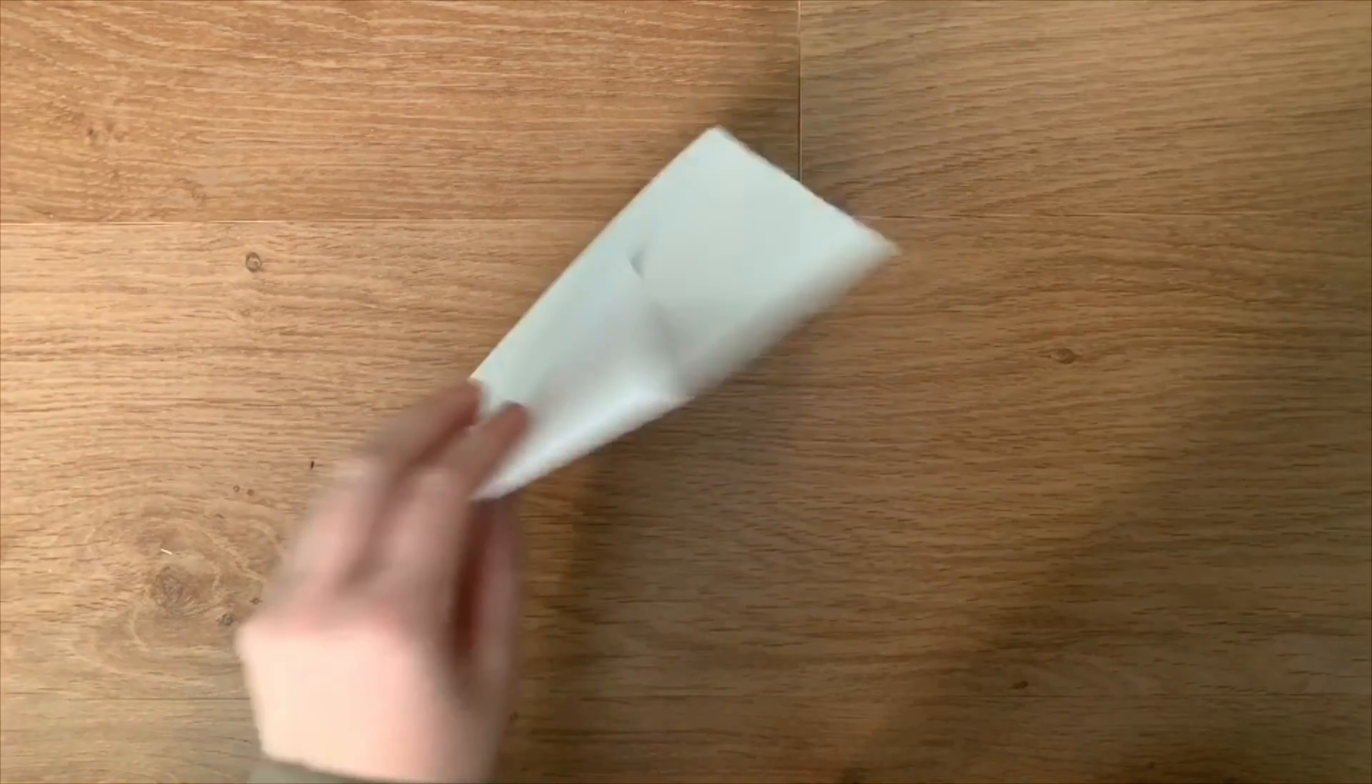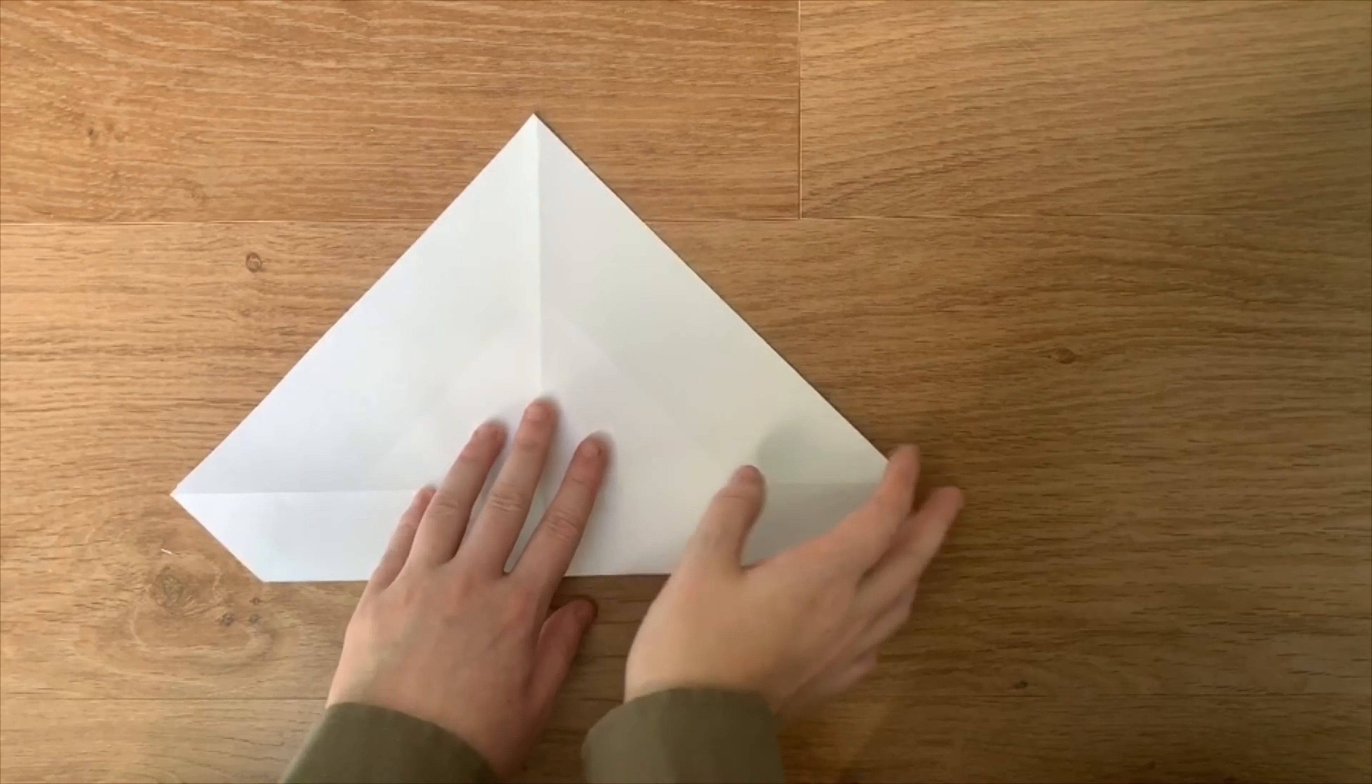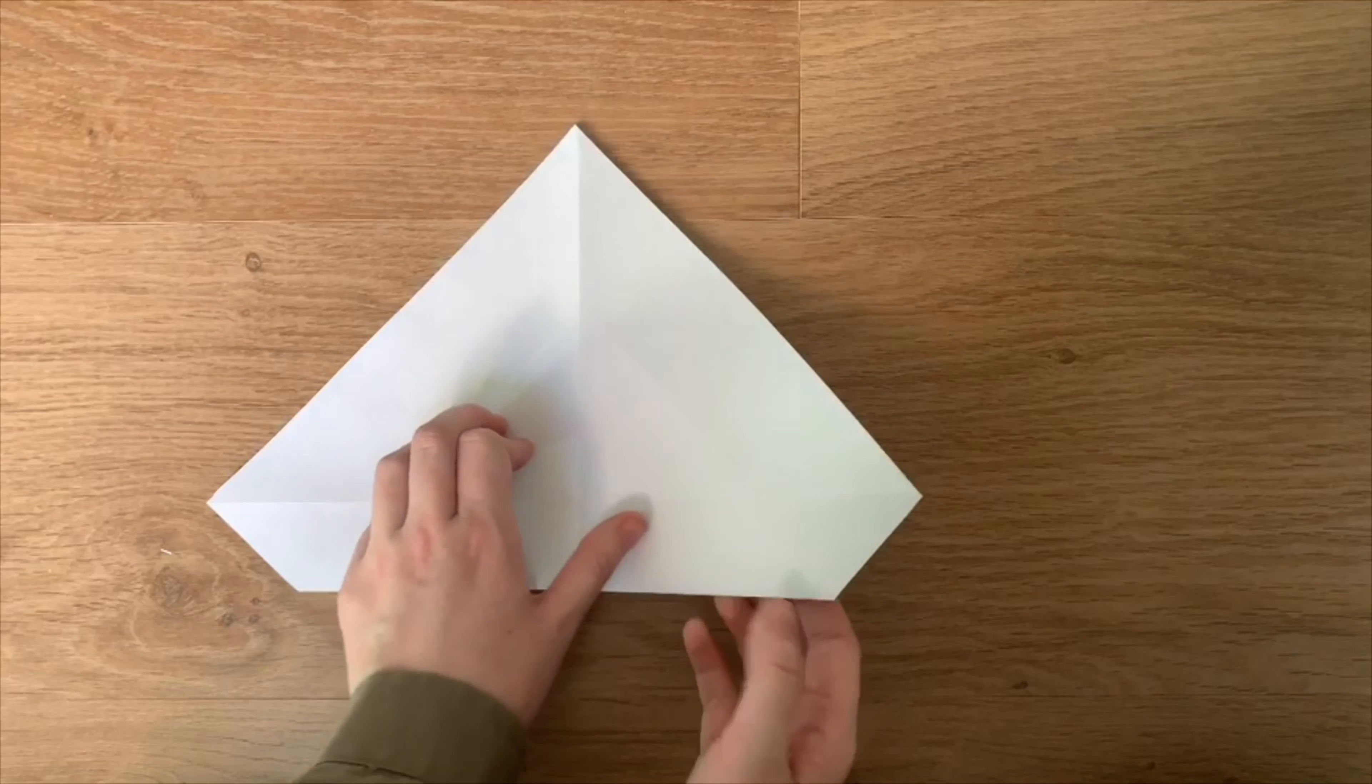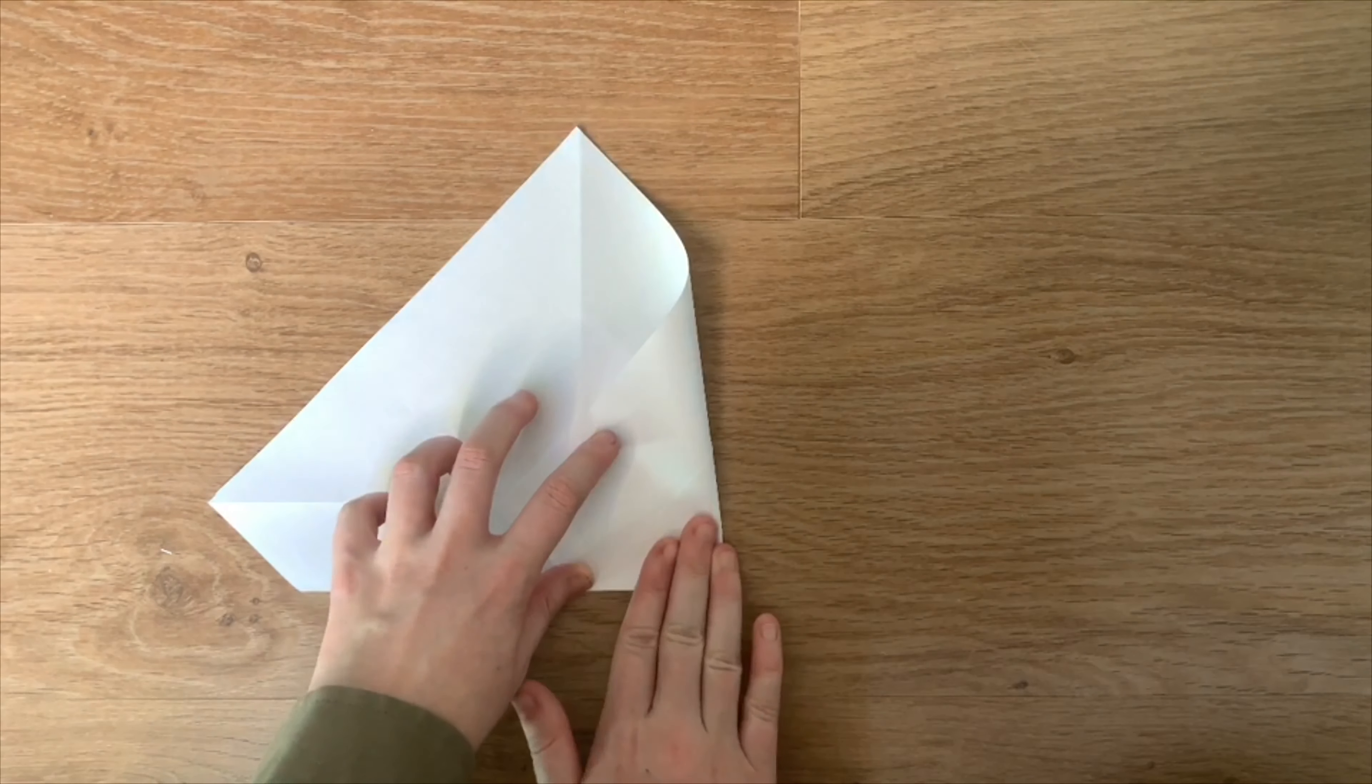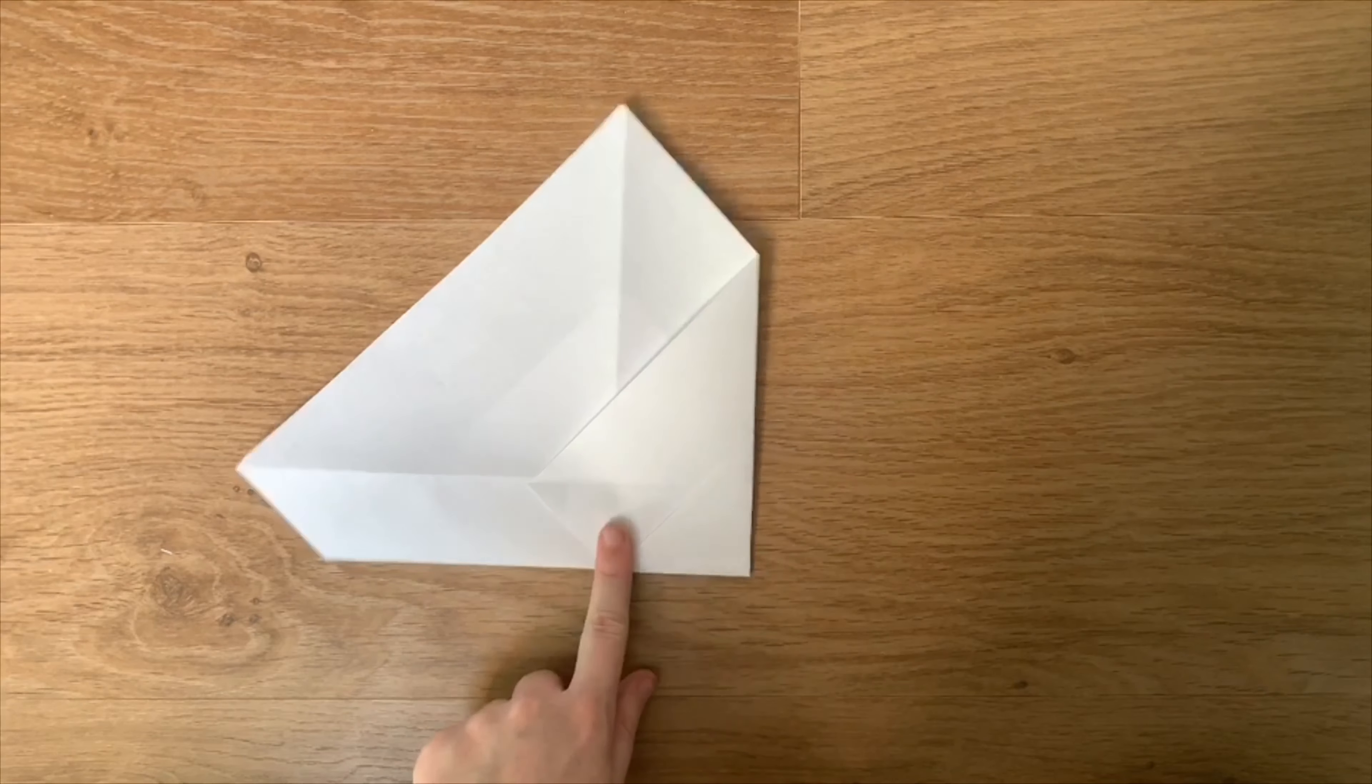For our next step to make the wings, you're going to want to turn it over. Then fold this corner to match with the center crease line. Do that for both sides. Just like this. And now do it on the other side.